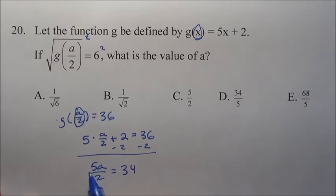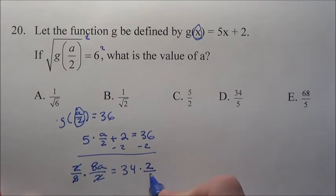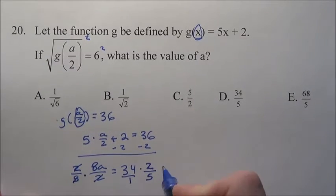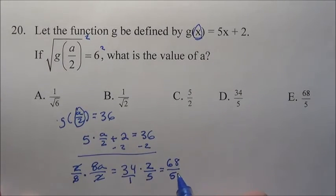Now how do you get a by itself? Just multiply by the reciprocal of 5/2. I multiply this side by 2/5, the 2s will cancel, 5s will cancel, leaving a by itself. Since we multiply the left by 2/5, I multiply this side by 2/5. That gives me 68 on top, 5 on the bottom. So a equals 68/5.